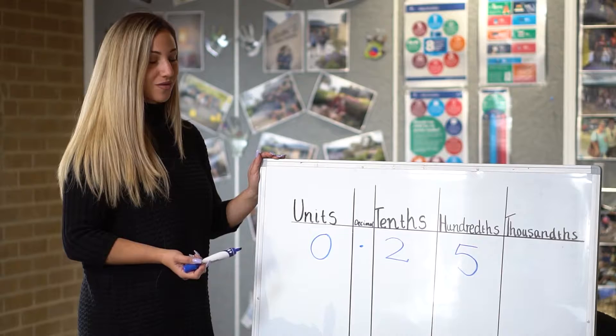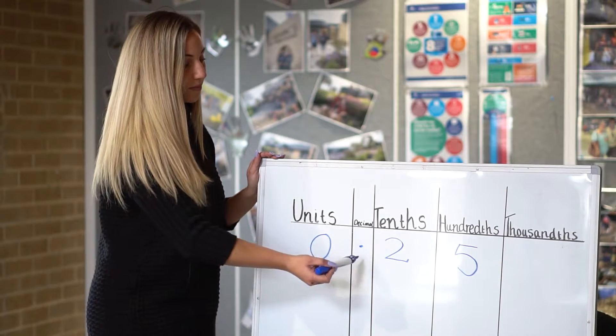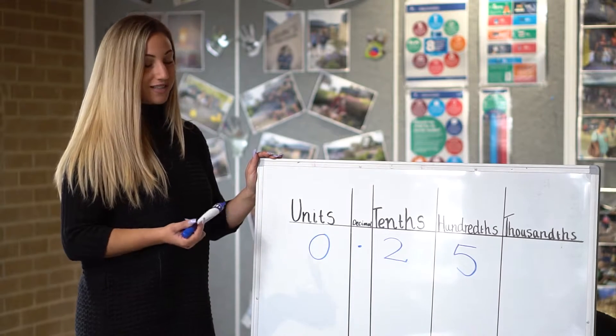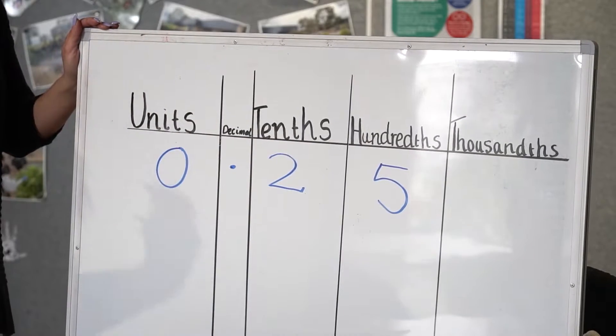We read this decimal as twenty-five hundredths. We don't read this as 0.25 because now we have twenty-five equal parts out of one hundred.